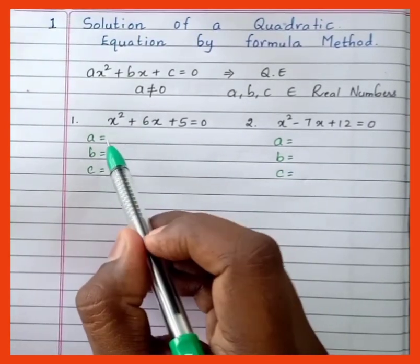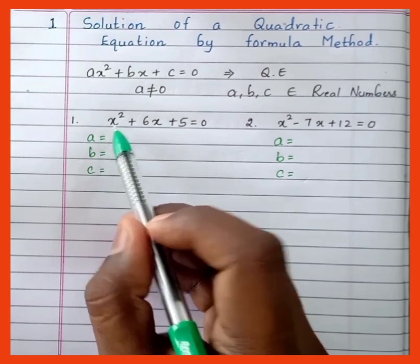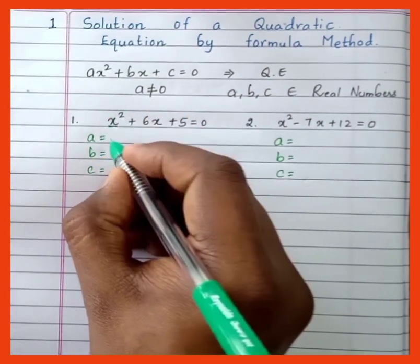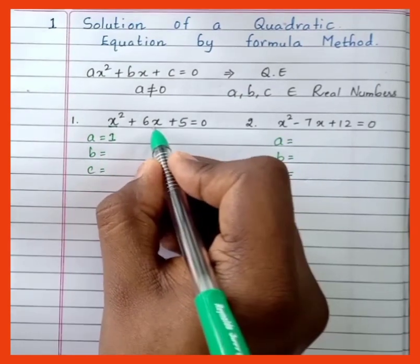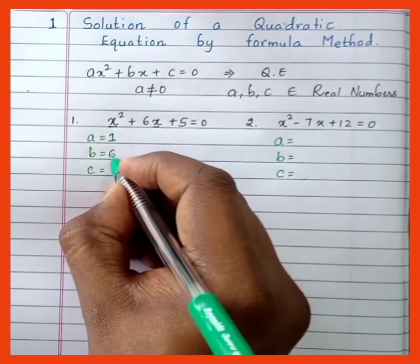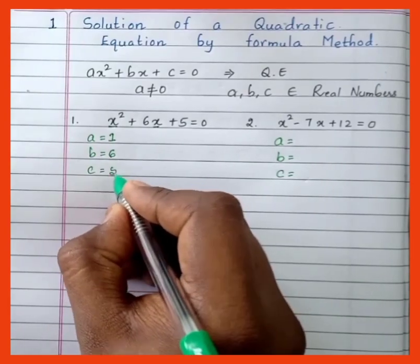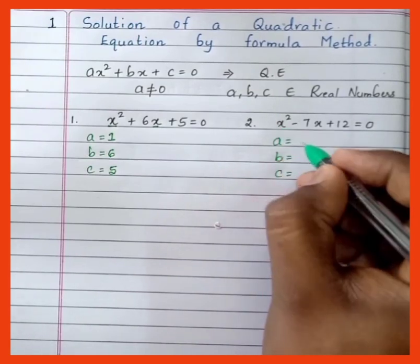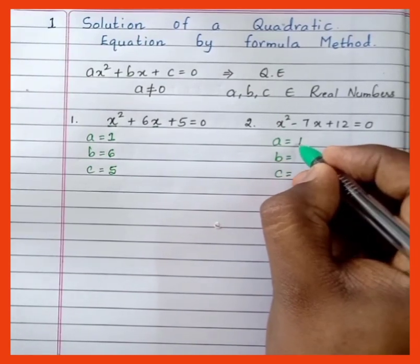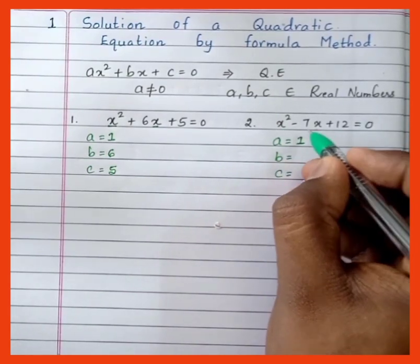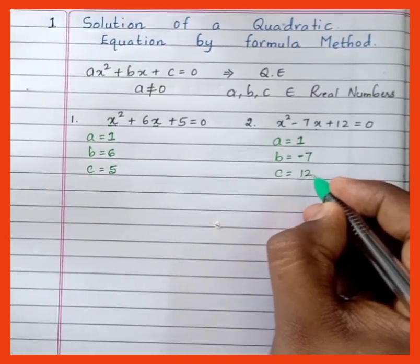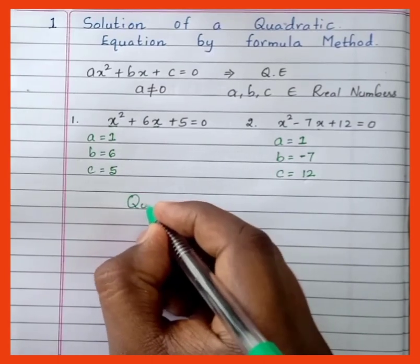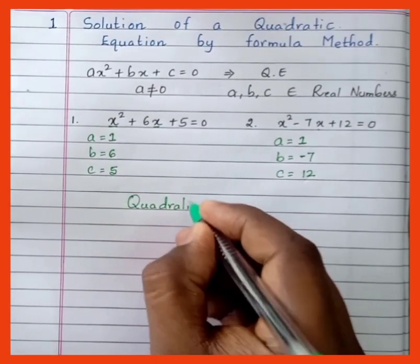Now we'll try to identify the coefficients a, b, and c. 'a' is the coefficient of x², which is 1. 'b' is the coefficient of x, which is 6. 'c' is the constant, which is 5. For the second example: a = 1, b = -7, c = 12.